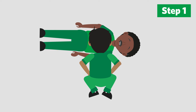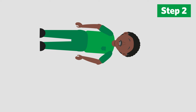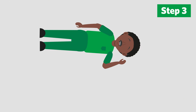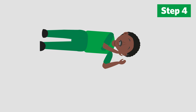Firstly, kneel on the floor by the side of your casualty. Angle the arm of the casualty by taking the arm nearest to you and positioning it at a right angle with their palm facing upwards. Next, make the hand to cheek move: bring the arm furthest away across the casualty's chest and place the back of their hand against the cheek nearest to you. Hold it in place there.